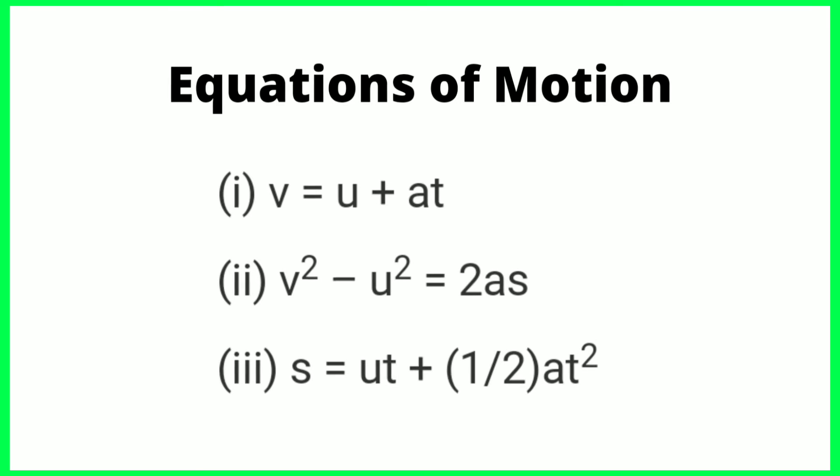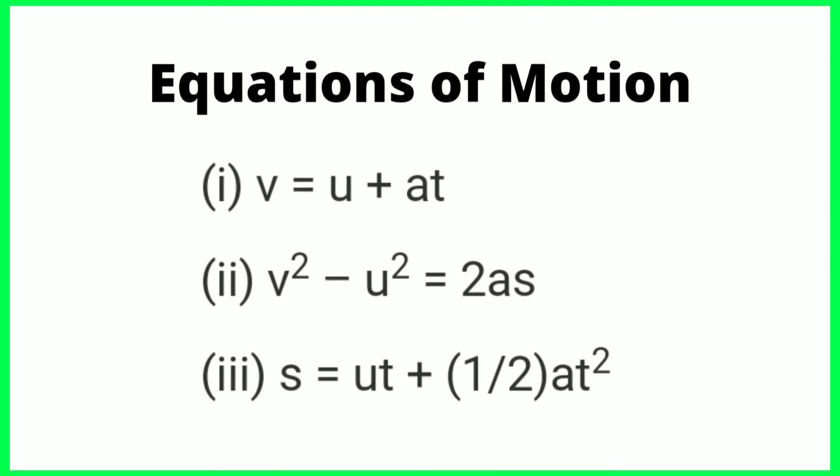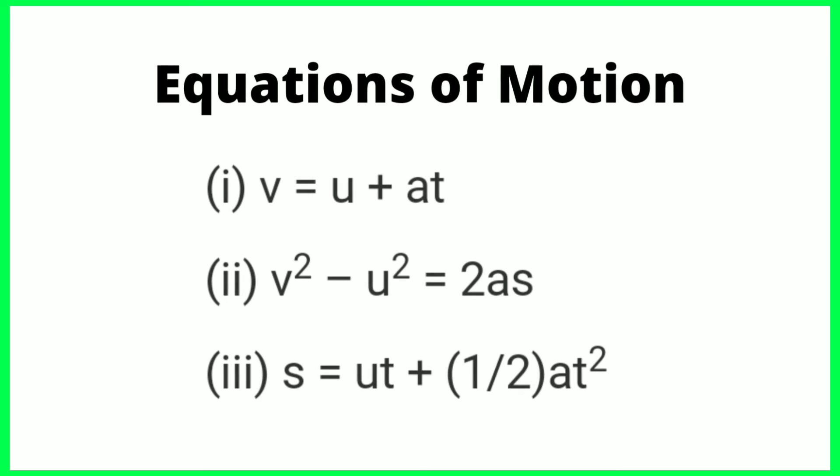Next are the equations of motion: v = u + at; s = ut + ½at²; v² - u² = 2as. Here v is the final velocity, u is the initial velocity, a is the acceleration, t is the time, and s is the distance. These are the equations of motion.